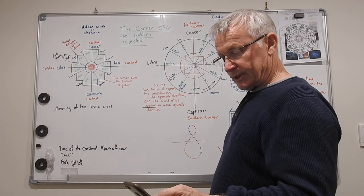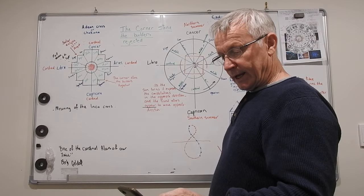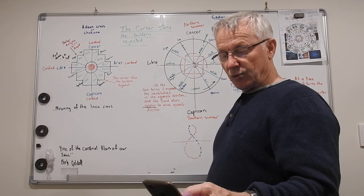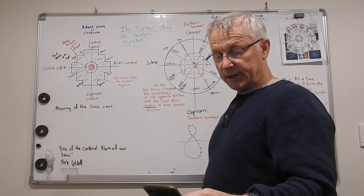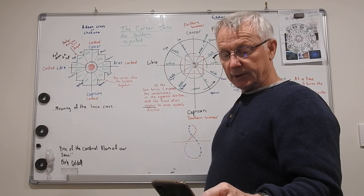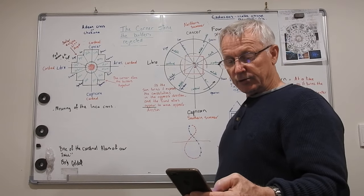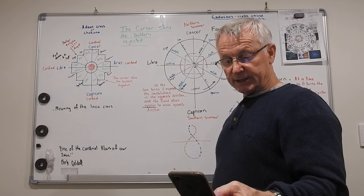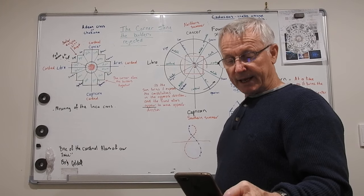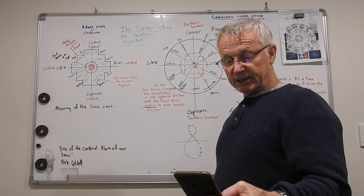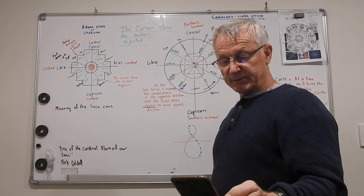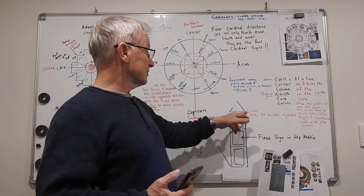We also see Peter referencing these words when he and John were asked by what power they had helped a crippled beggar. Scripture says then Peter, filled with the Holy Spirit, said to them, rulers and elders of the people, if we are being called to account today for an act of kindness shown to a cripple and are asked how he was healed, then know this, you and all the people of Israel, it is by the name of Jesus Christ of Nazareth whom you crucified but whom God raised from the dead that this man stands before you healed. He is the stone you builders rejected which has become the capstone. Salvation is found in no one else. There is no other name under heaven given to men by which we must be saved.